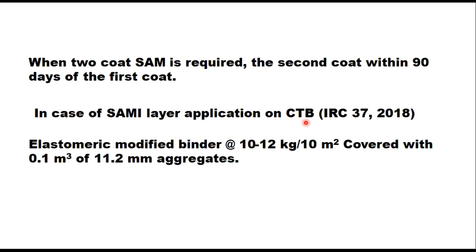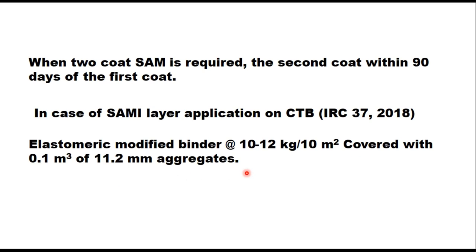IRC 37:2018 suggests use of a SAMI layer above the cement treated base. It specifies that elastomeric modified binder should be used at the rate of 10 to 12 kg per 10 m² area, covered with 0.1 m³ of 11.2 mm aggregate size.